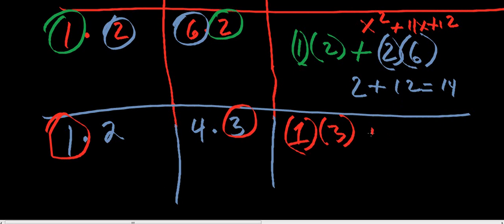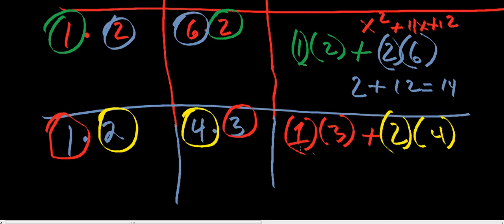We want to multiply the farthest apart numbers, and we want to add them to the numbers that are closest together, which is 2 and 4. So now we've got 1 times 3, which is 3, 2 times 4, which is 8. We're going to add 3 and 8, and we've got 11. So we know this is our factors.